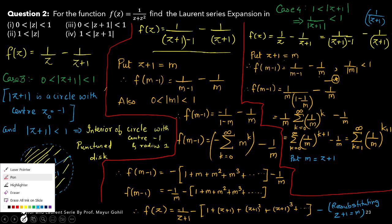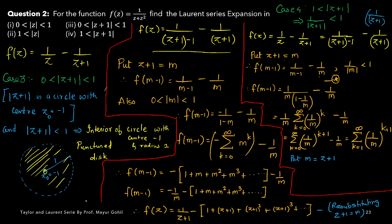So what happens to the function originally — f(z) becomes summation of [1 upon (z+1)]^(k+1), k going from 1 to infinity. This is the final answer for case number 4.